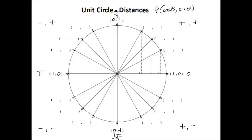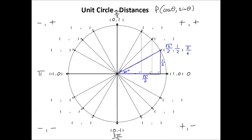Now let's look at our special right triangles. Our 30-60-90 right triangle has an angle of 30 degrees, which is π/6 in radians. We know the hypotenuse equals 1 — that's the radius of the unit circle. The short leg is half the hypotenuse, and the long leg is √3/2. So the cosine, which is the x-coordinate, is √3/2, and the sine, the y-coordinate, is 1/2.